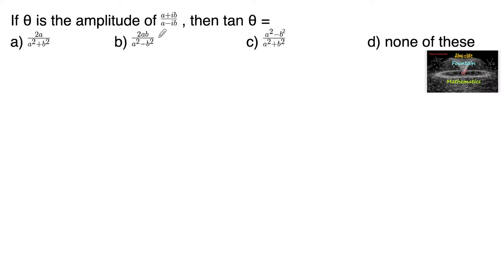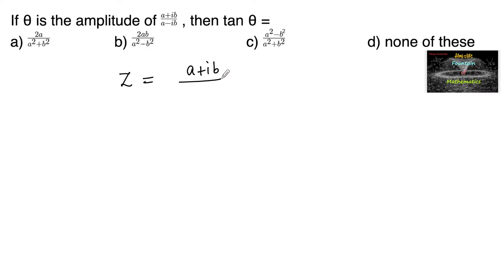If θ is the amplitude of (a-ib)/(a+ib), then tanθ is equal to? So given the complex number, let us consider z is equal to (a-ib)/(a+ib).